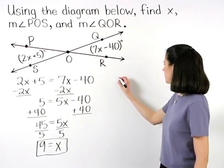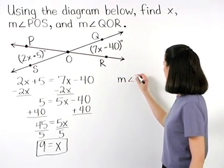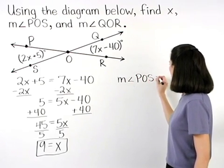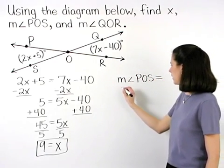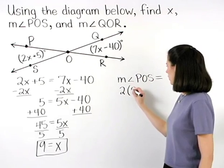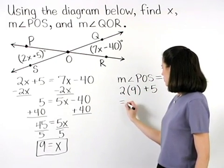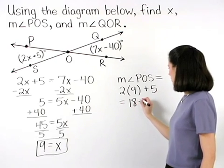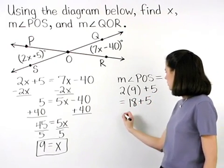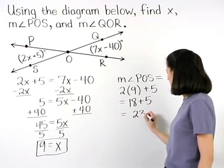So the measure of angle POS, which is 2x plus 5, is 2 times 9 plus 5, which is 18 plus 5, or 23 degrees.